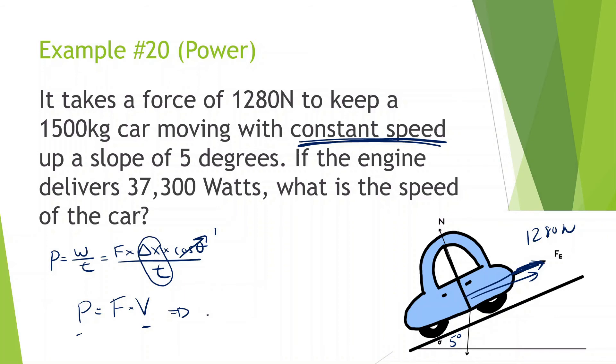So let's figure that out. Power is equal to 37,300. Force is equal to 1280 times the velocity. And velocity is equal to 37,300 divided by 1280, which is 29.14 meters per second.